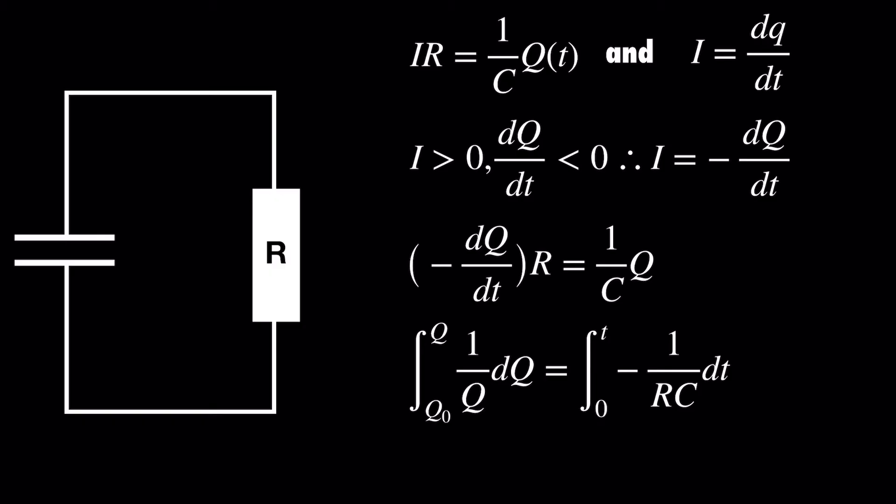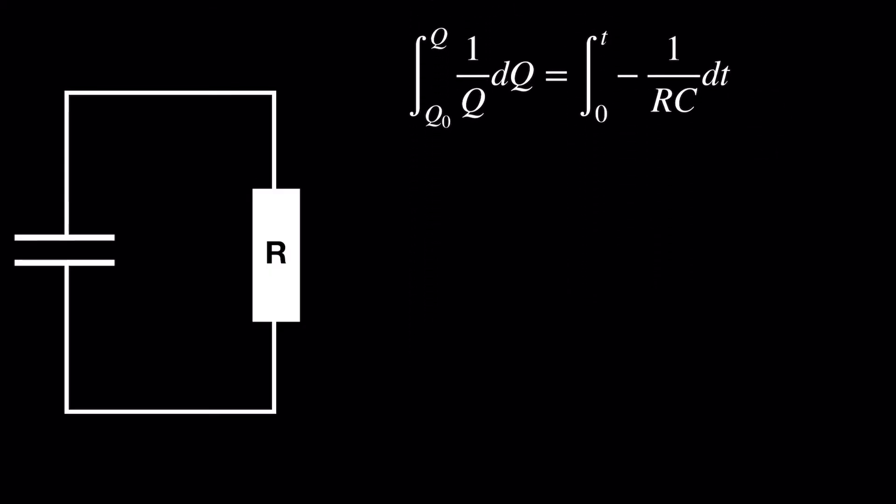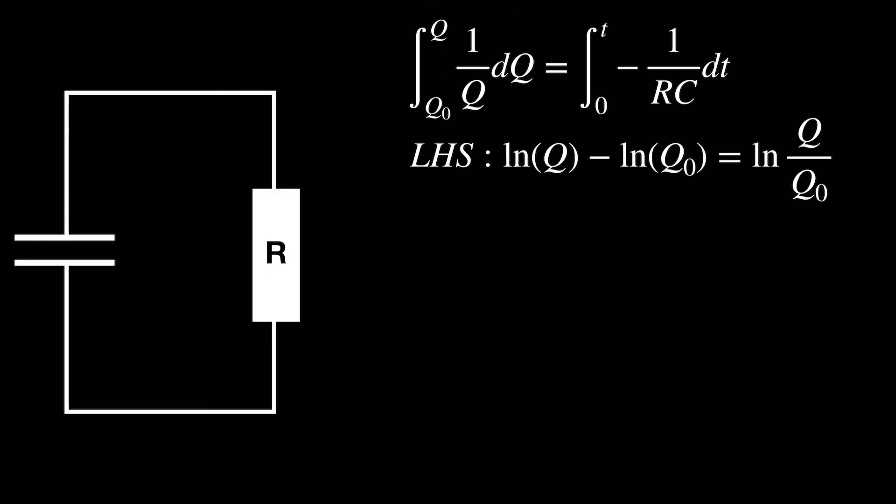If you're familiar with integration, these two integrals should be pretty straightforward, but let's go through it anyways. The left-hand side is ln Q minus ln Q0, which, using our log laws, is ln Q over Q0.